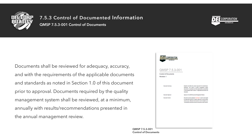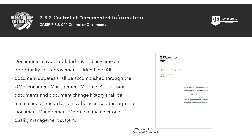Documents required by the quality management system shall be reviewed at a minimum annually, with results or recommendations presented in the annual management review. Documents may be updated or revised any time an opportunity for improvement is identified. All document updates shall be accomplished through the QMS document management module.